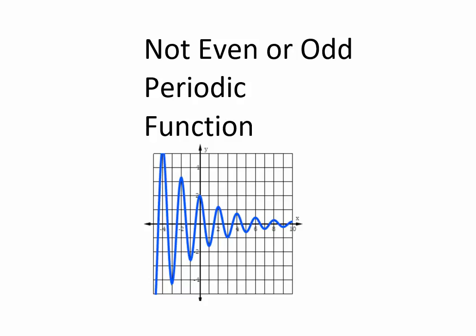Here's an example of a periodic function. So it keeps repeating, but you can actually see that it's neither even nor odd. Not only that, this is called a damped harmonic motion.